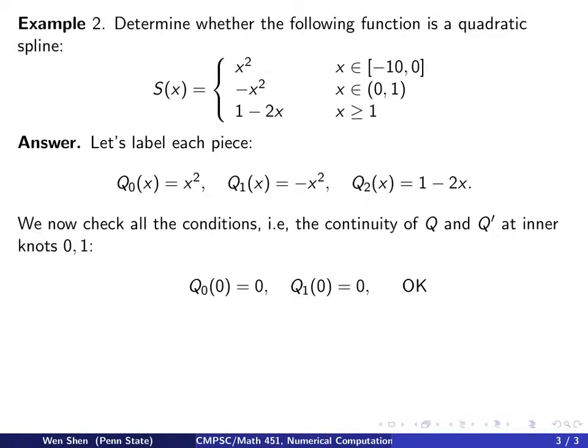We now check all the conditions: the continuity of Q and Q' at the inner knots 0 and 1. Let's check Q at 0. Q(0) from the left is 0, and Q(0) from the right is 0. This condition is okay.